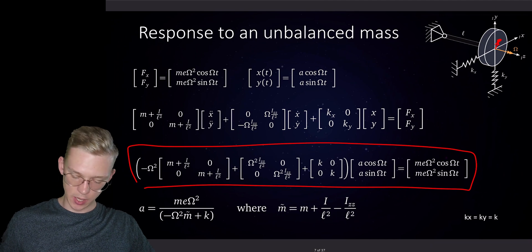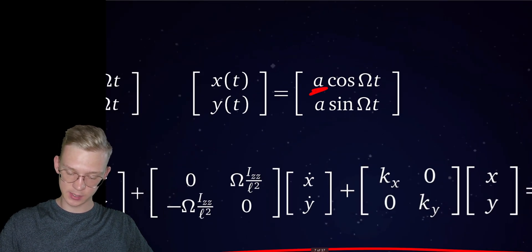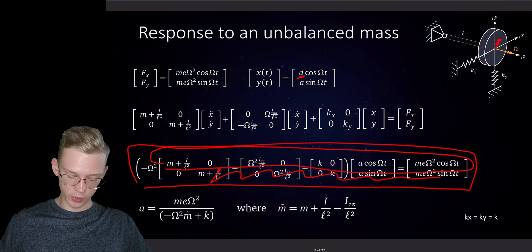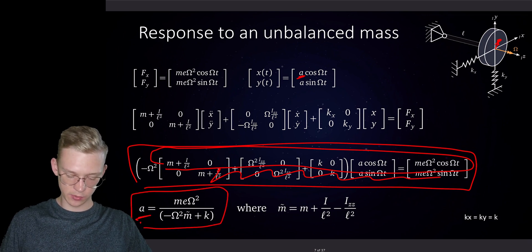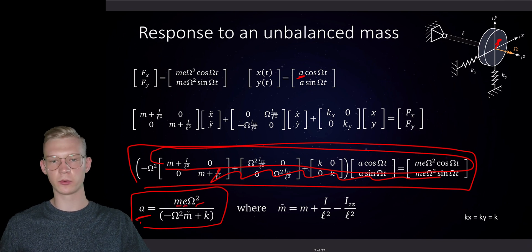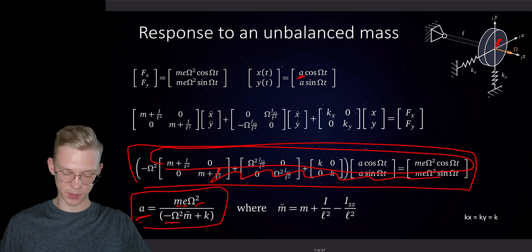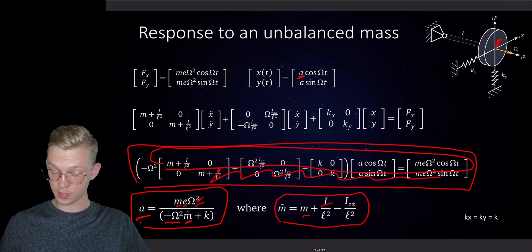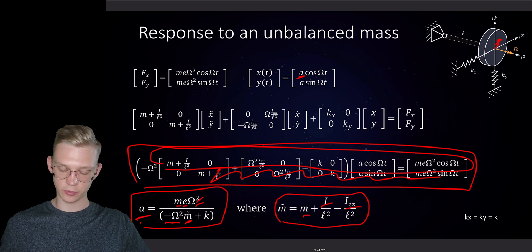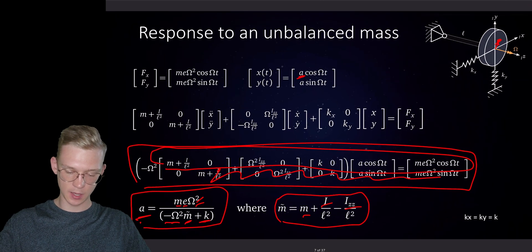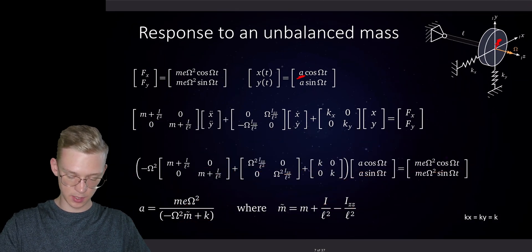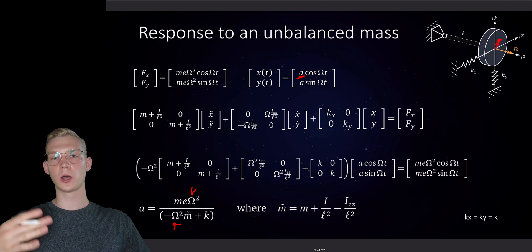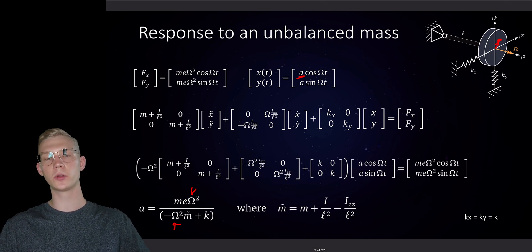If we solve that equation now, we're actually looking for this amplitude. If we just look at one equation because the second one is the same, we will get a equals mass times eccentricity times our rotation speed squared, divided by minus rotation speed squared times our mass. This mass is just the mass plus the inertia around x and y and the rotational inertia around z and of course the stiffness. So now we know that for a certain rotation speed we will have a certain amplitude and we can now plot this amplitude over time and see where we fall into resonance.